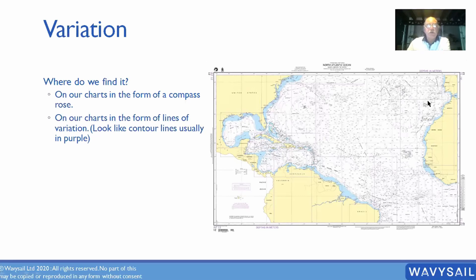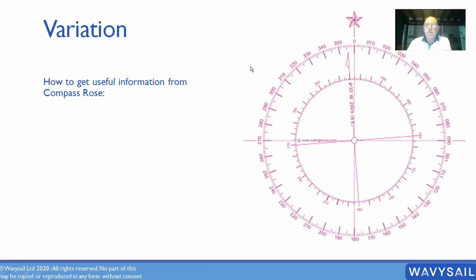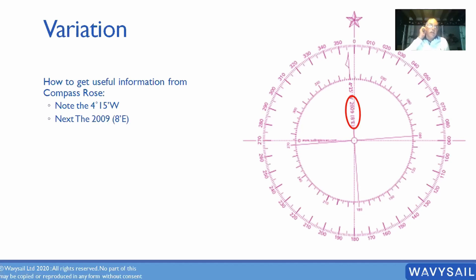Modern GPS and electronic equipment will have variation built in — a fluxgate compass knows your variation by knowing where you are and what the time is. Here's our compass rose: there's true north with a star, and an arrow showing magnetic variation. It reads four degrees 15 minutes west, dated 2009, changing eight minutes east every year. So that information gives us the base variation at the date the compass rose was printed and the annual magnetic change thereafter.